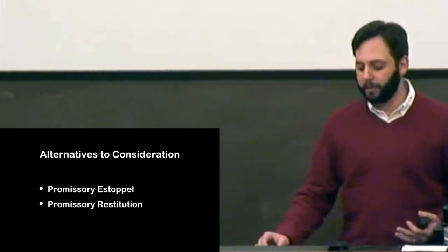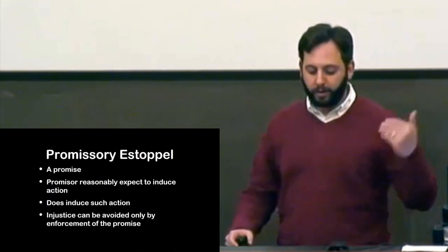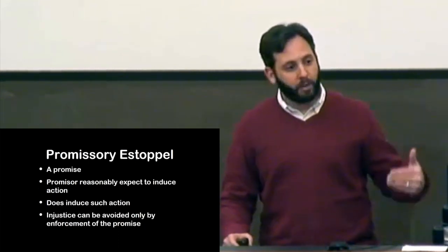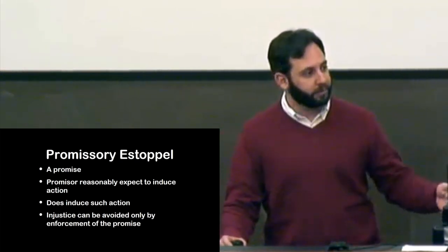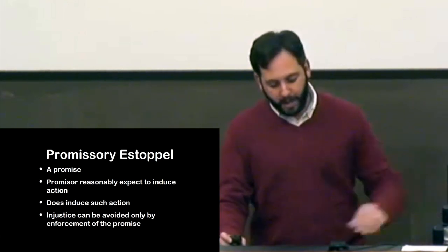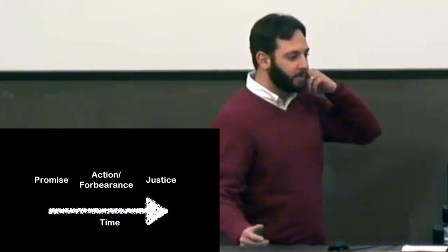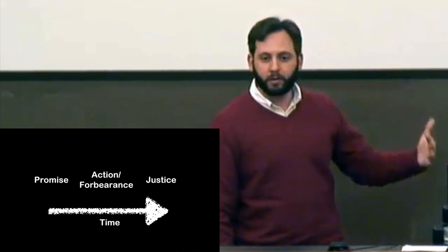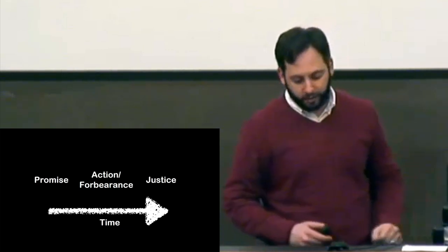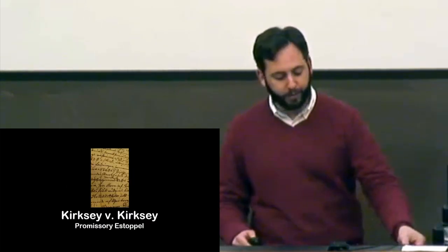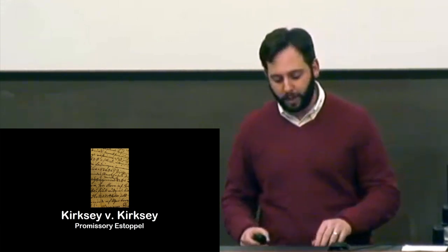Promissory estoppel requires a promise — something the promisor would expect to induce reliance — and there was in fact reliance subsequent to the promise, and injustice can be avoided only by enforcement. The timeline runs: first a promise, followed by an action or forbearance in reliance on that promise, and then justice requires its enforcement. A couple of cases pertain to this, starting with Kirksey v. Kirksey.